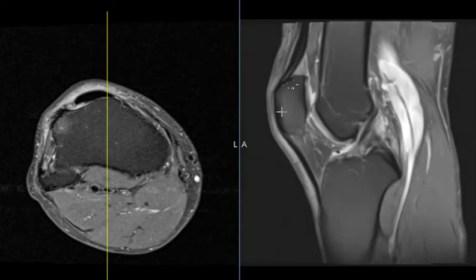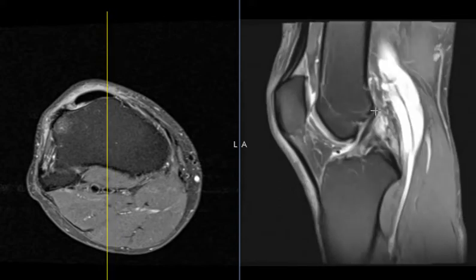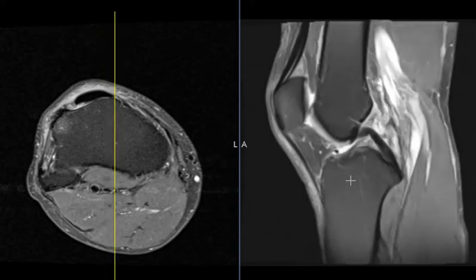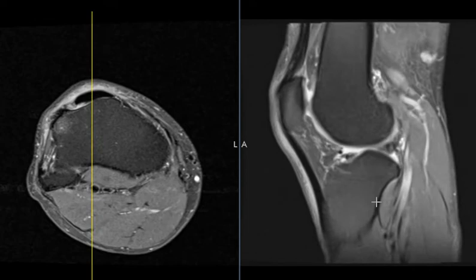In the sagittal view we see the kneecap, we see the femur, we see the tibia, and we see the ACL looking great. And we're going to go over towards that bright signal.